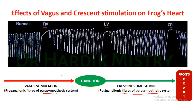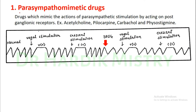Now we begin with the identification of graphs with different drugs. We have four categories: parasympathomimetic drugs, parasympatholytic drugs, sympathomimetic drugs, and ganglion blocker drugs. Parasympathomimetic drugs mimic the actions of parasympathetic stimulation by acting on postganglionic receptors. These include acetylcholine, pilocarpine, carbachol, and physostigmine.